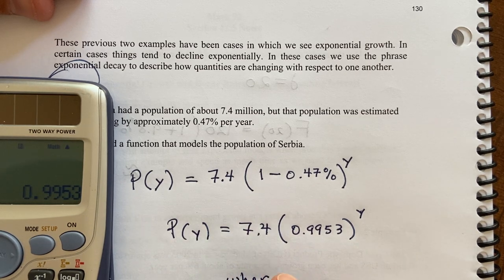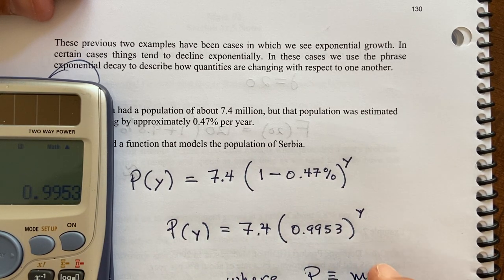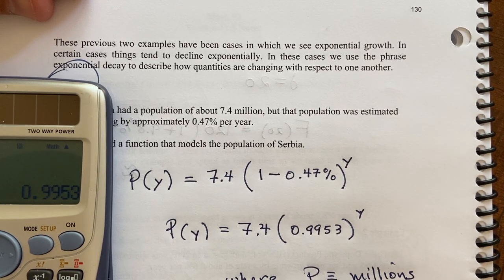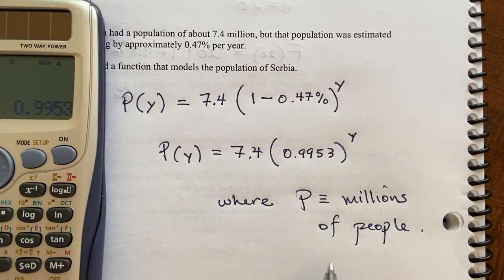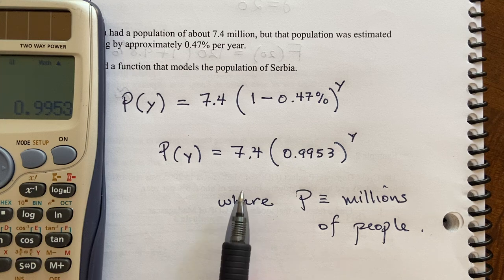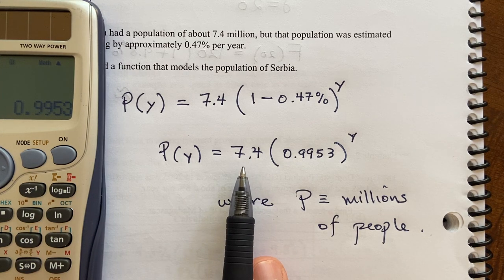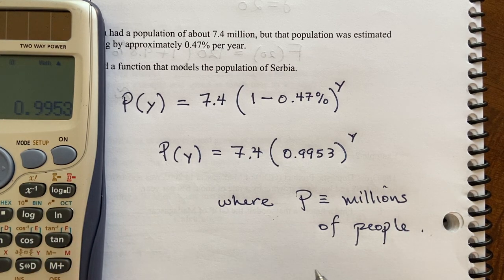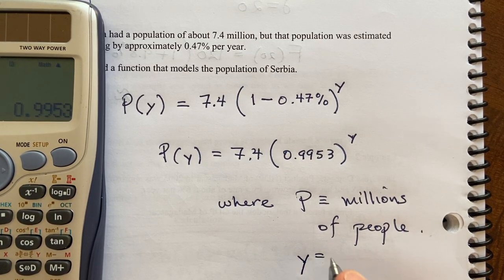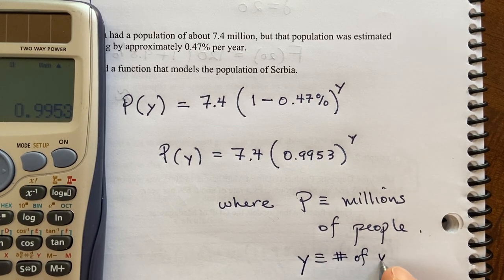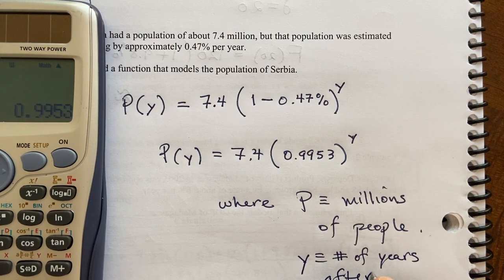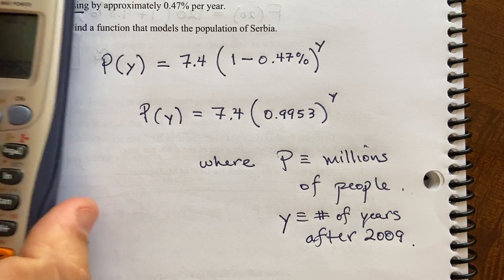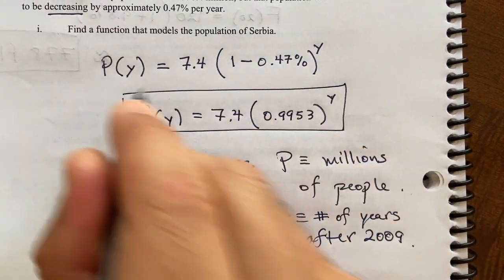I'll just say where P is defined in millions of people. Just to clarify, P is defined as millions of people, so it's not just 7.4 people. I just avoided writing out all those zeros by stating this clearly. And Y is a number of years after 2009. So here's my model. I'll go ahead and box that answer.